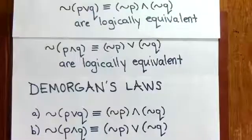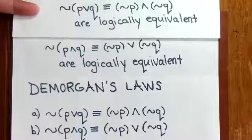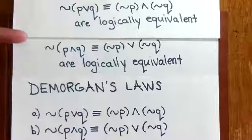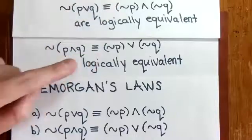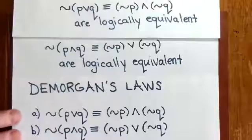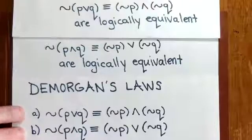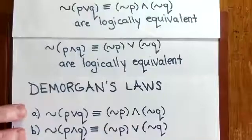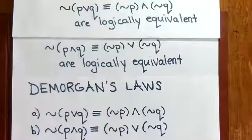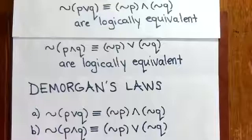Notice that in the first example and the second example, where we showed logical equivalence between these two statements and between these two statements, these are actually DeMorgan's Laws for logic. We've shown how to show equivalency using truth tables, and now you can use DeMorgan's Laws because you've seen the truth tables.